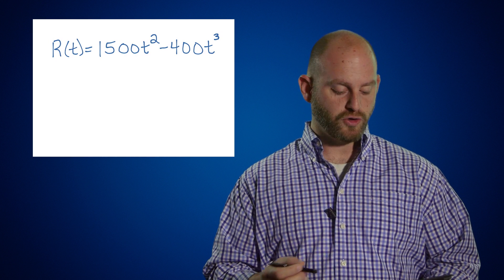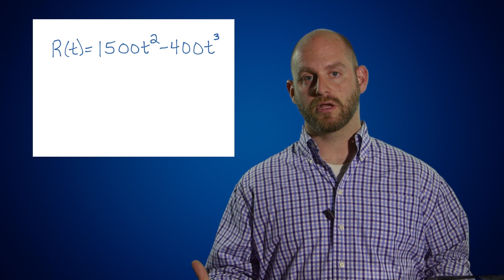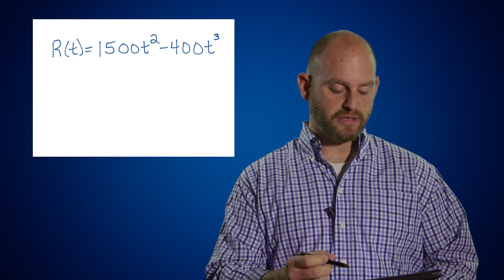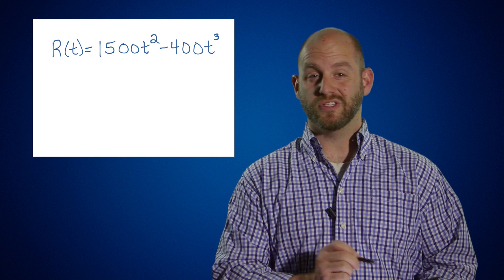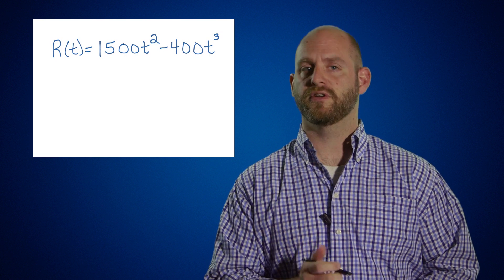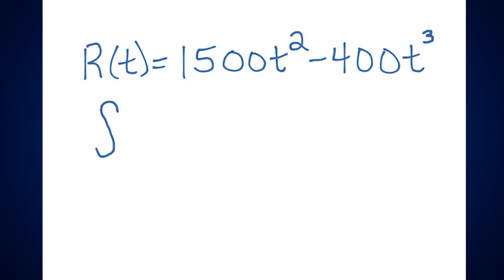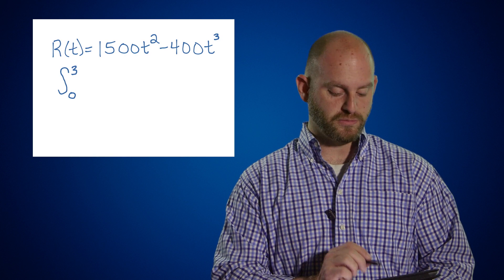What we want to do is figure out the total amount of people that enter the concert before it begins — from five o'clock to eight o'clock. That is a definite integral. We're going to use Part Two of the Fundamental Theorem of Calculus to find this value. So we integrate this rate from hour zero, which is 5 p.m., until eight o'clock, which is three hours later — a definite integral from zero to three.